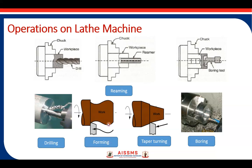Forming operation is used for producing shapes on the workpiece. The shape of the tool is the same as the required shape on the finished product, with feed perpendicular and along the axis of the lathe machine. These are the different operations which can be performed on the lathe machine, which is why it is called the mother of all machine tools.